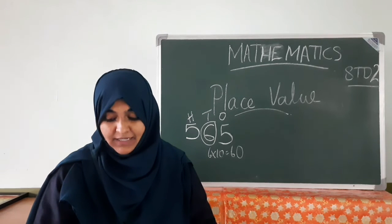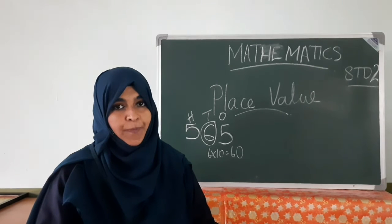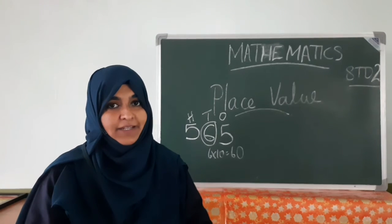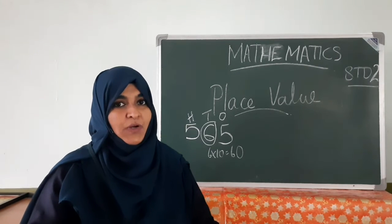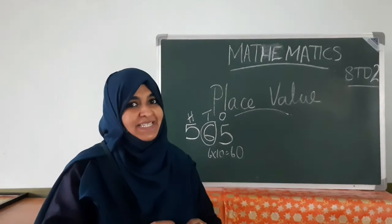Circle the numbers in which the place value of three is in three hundred. In the text book. In the text book, already mentioned color. But, I don't have any color pencil.